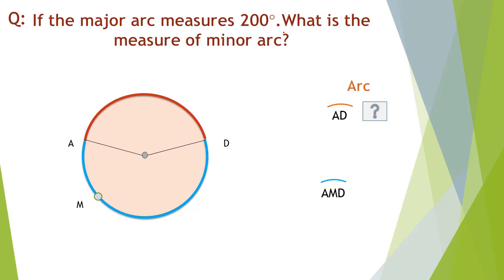If the major arc measures 200 degrees, what is the measure of the minor arc? A complete circle is 360 degrees, so we can subtract 200 from 360 to get the value of the minor arc.